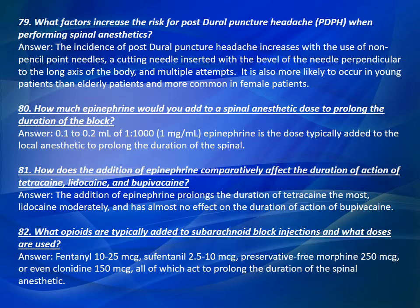Question 82: What opioids are typically added to subarachnoid block injections and what doses are used? Fentanyl 10 to 25 micrograms, sufentanil 2.5 to 10 micrograms, preservative-free morphine 250 micrograms, or clonidine 150 micrograms, all of which act to prolong the duration of the spinal anesthetic.